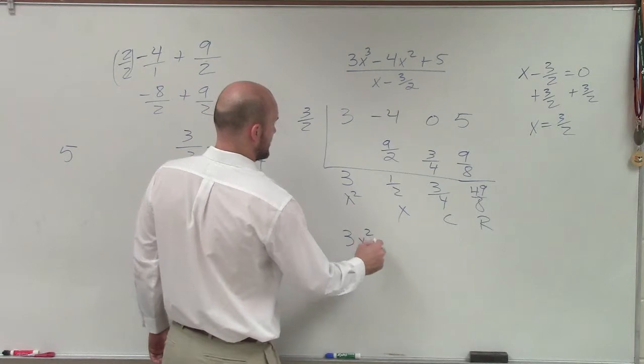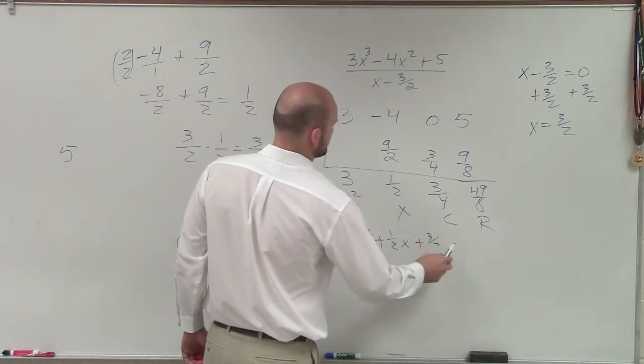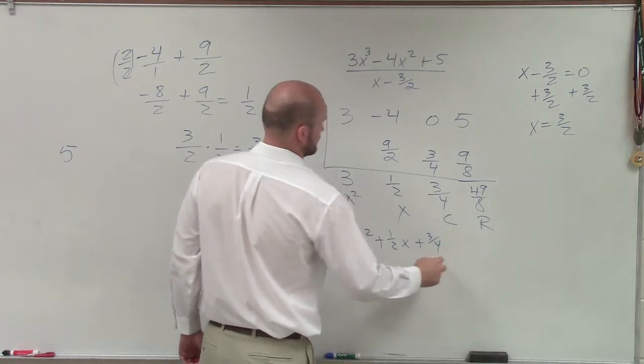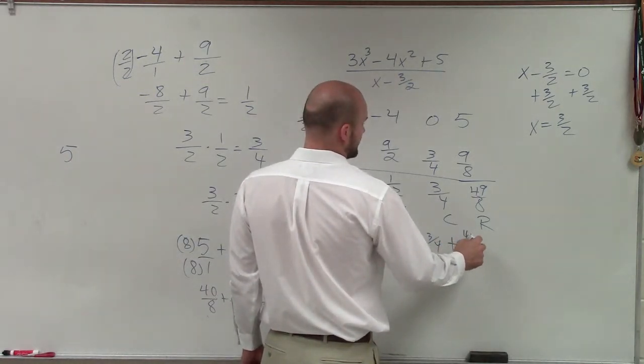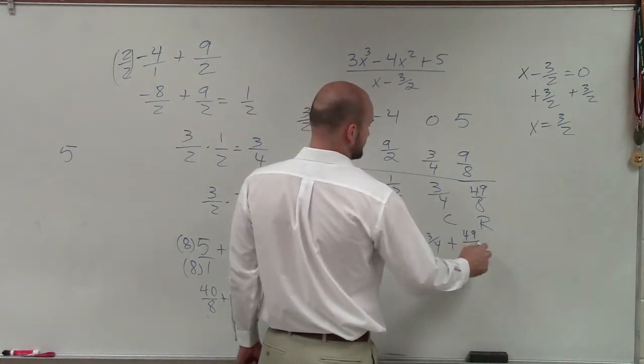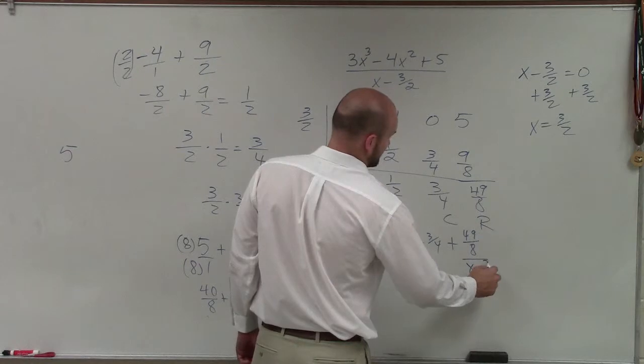So therefore I have 3x² + 1/2 x + 3/4 and then plus my divisor, which should be 49/8 divided by x - 3/2.